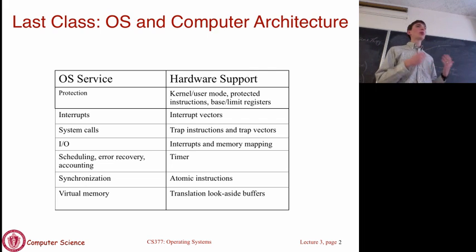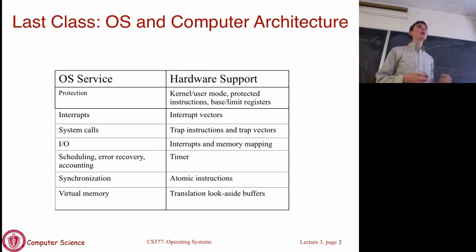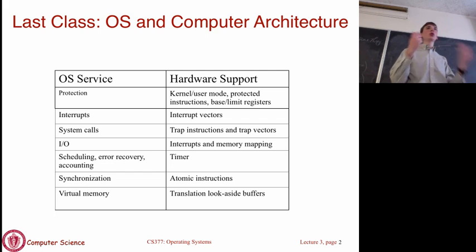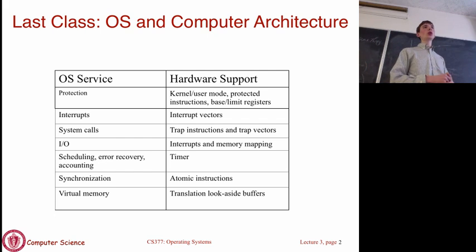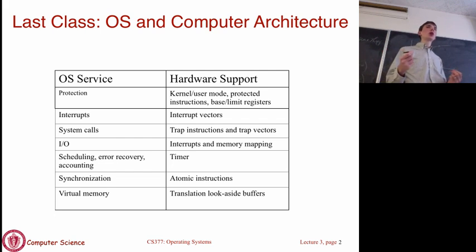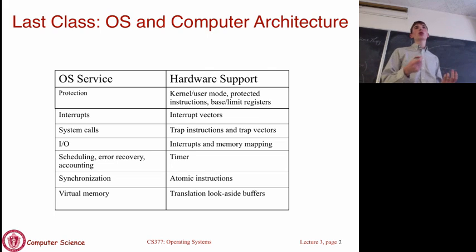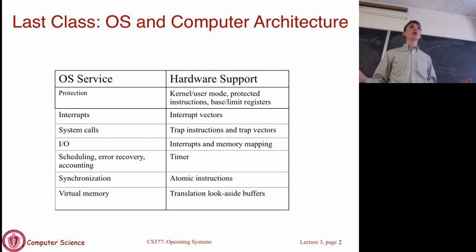We also talked about protecting memory with base and limit registers. Whenever your architecture goes to access a memory location, it checks the base and limit register to make sure the address you're trying to access is within the allowed range.